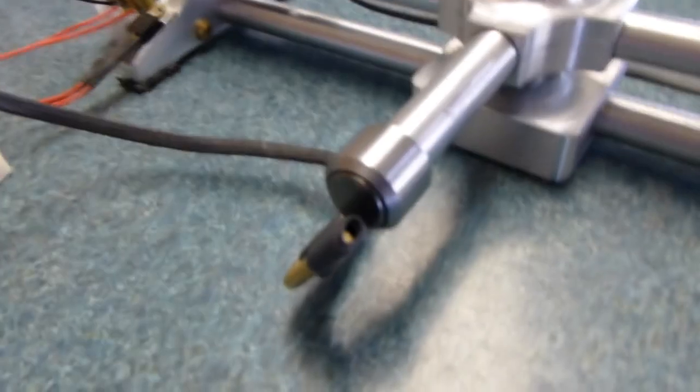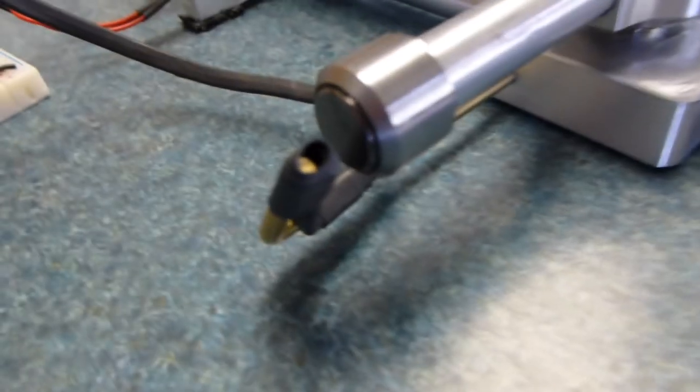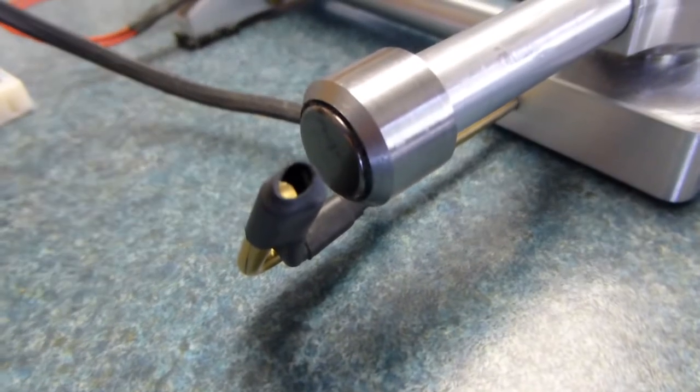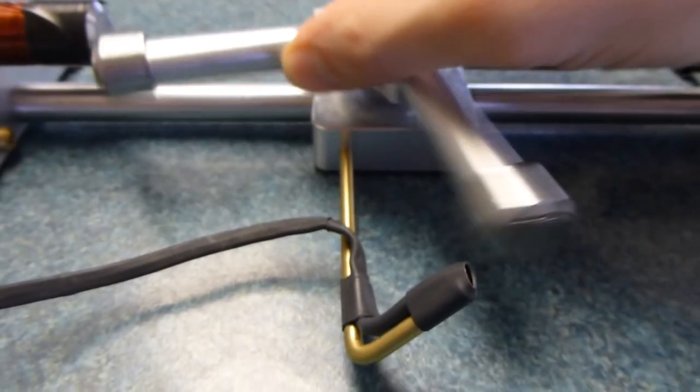The key to the whole thing is this Hall Effect sensor here. This is a Hall Effect sensor that's housed inside some heat shrink and it's what senses the position of the rotor.